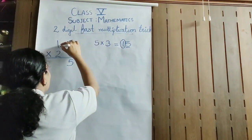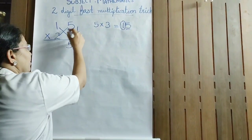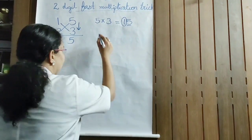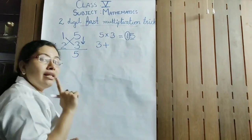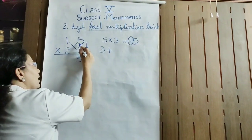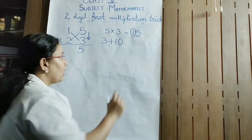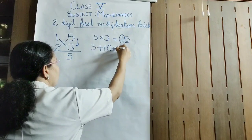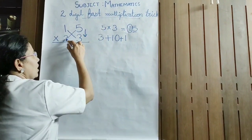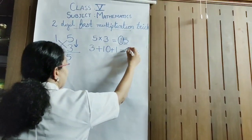Second step: just cross multiply. Put a cross and you have to multiply these two numbers and these two numbers. First, I am going to multiply 1 with 3 — 1 into 3 is 3. Then you have to multiply 5 into 2 — 5 into 2 is 10. And there is 1 carry. So 3 plus 10 plus 1: 1 into 3 is 3, 5 into 2 is 10, and the carry gives a total of 14.